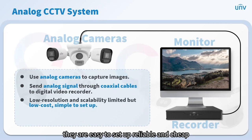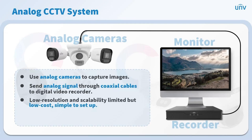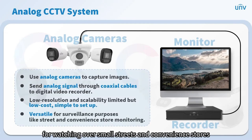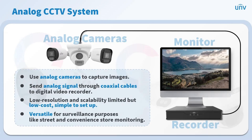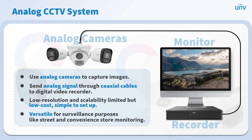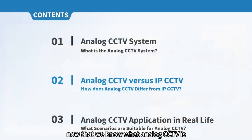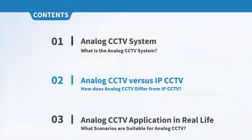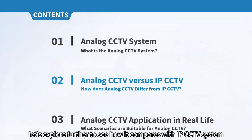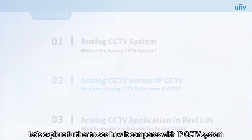Analog CCTV systems are easy to set up, reliable, and cheap. If you need a system that works well for watching over small streets and convenience stores, you might want to consider this system. Now that we know what analog CCTV is, let's explore further to see how it compares with IP CCTV systems.